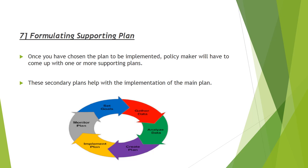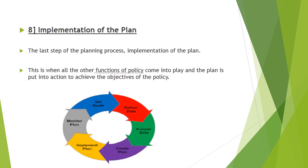The eighth and final step is implementation of the plan. This is when all other functions of policy come into play and the plan is put into action to achieve the policy objective. The tools required for implementation include the type of plan, procedures, policies, budget, rules, and standards. Following implementation, we move to monitoring the plan — that is, evaluating our plan.